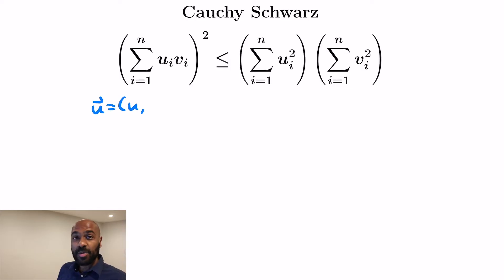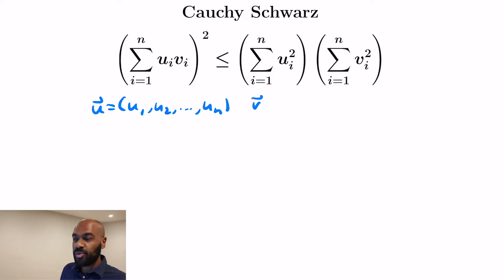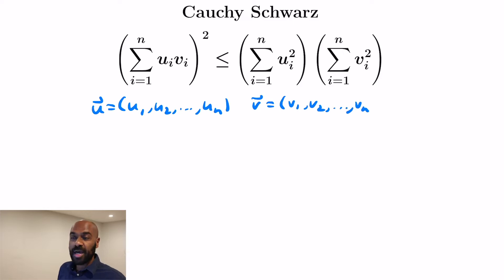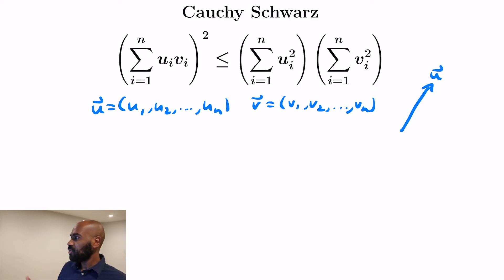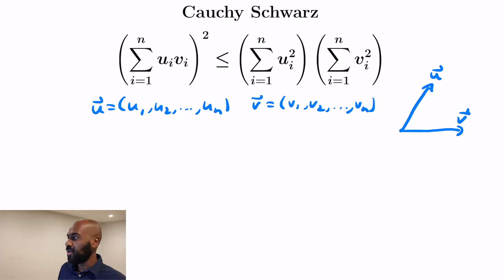To see why this is the case and when equality holds, we'll construct vectors: a vector U whose components are the U_i's, and a vector V whose components are the V_i's. We're going to look at how this inequality relates to these two vectors. We'll draw them with the same tail, as we see on the right-hand side.